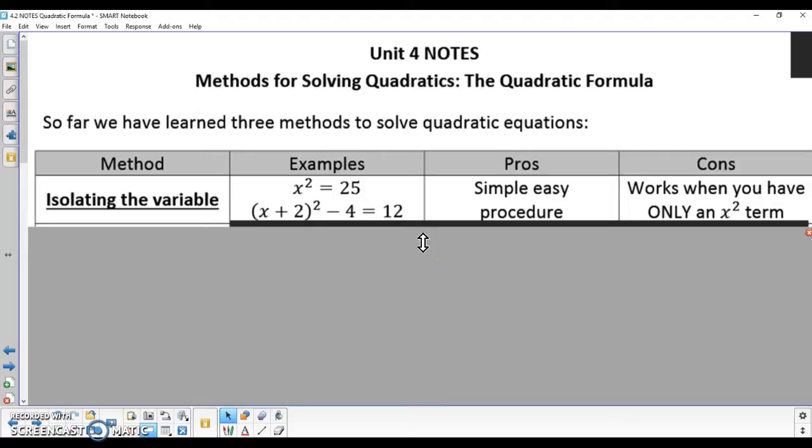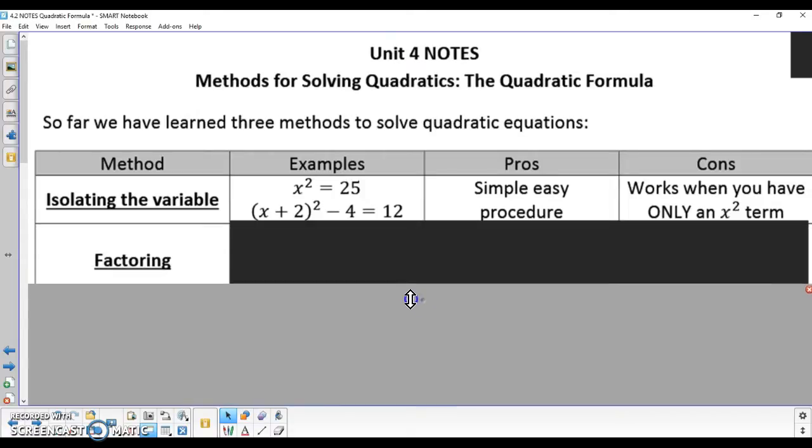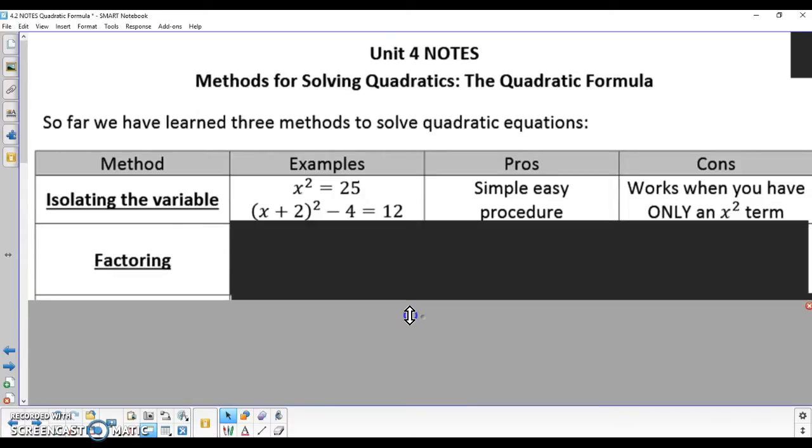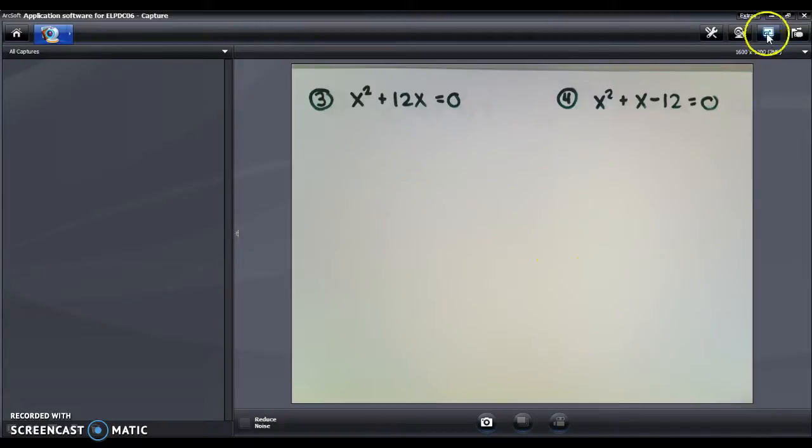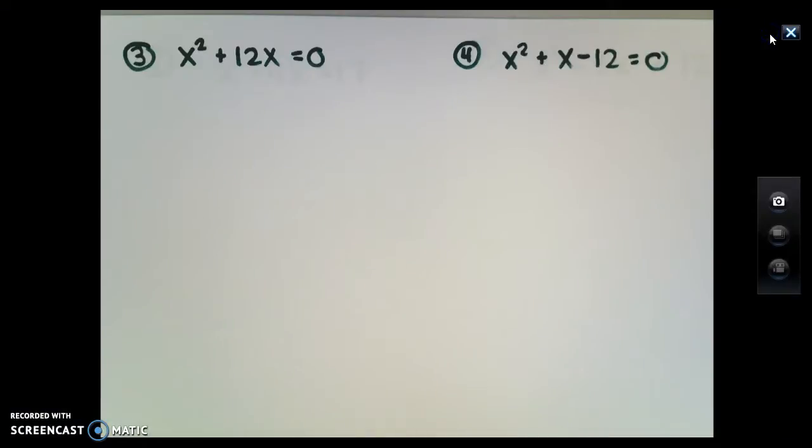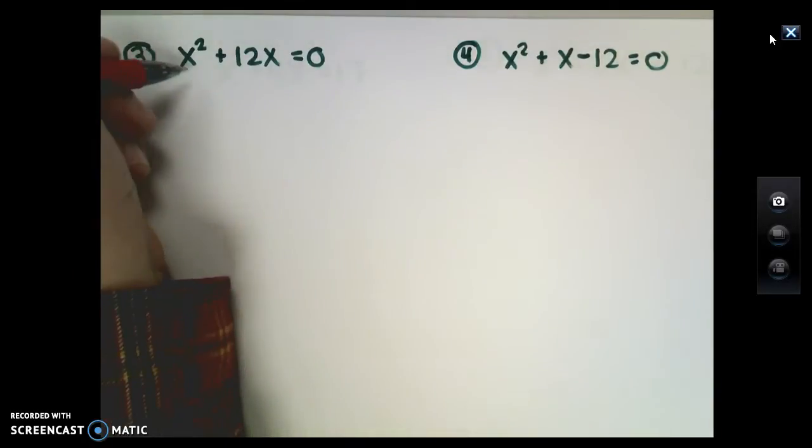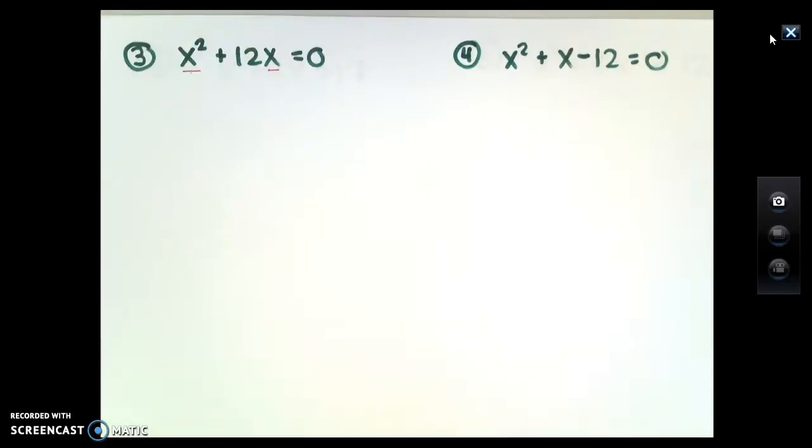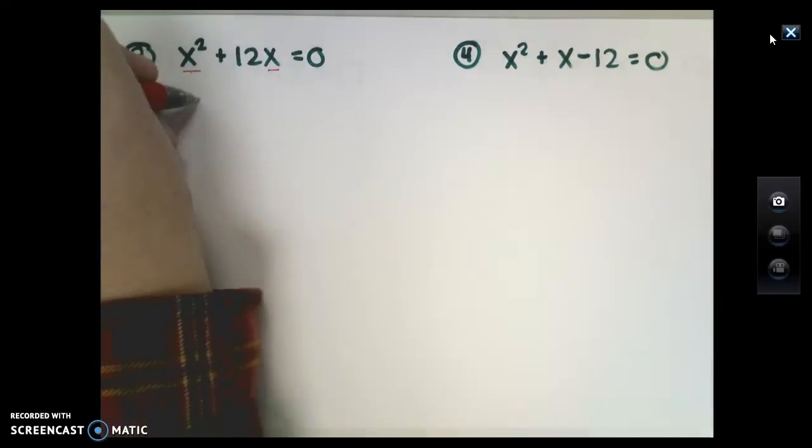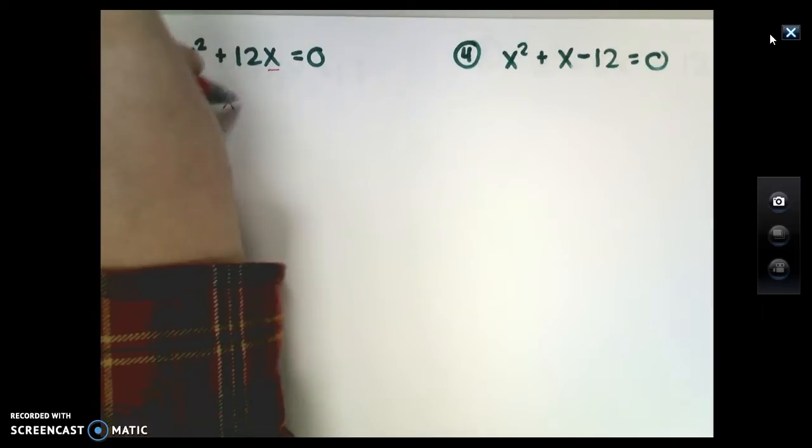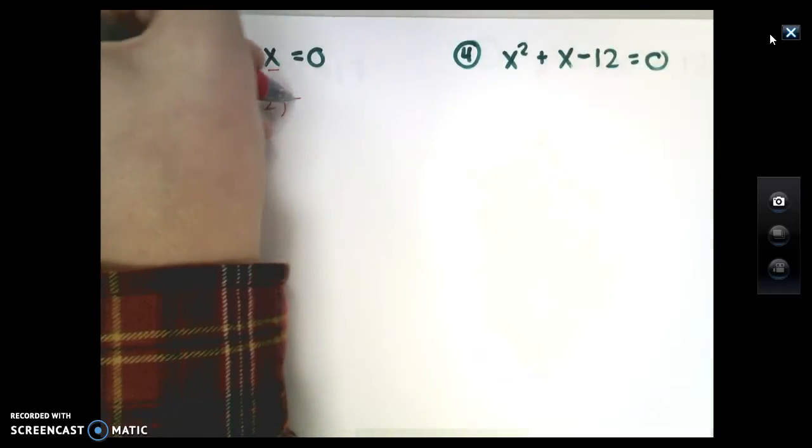Once we learned isolating the variable doesn't work all the time, we learned another very useful method that we spent most of this course working with, and that is factoring. The two examples we just looked at, example 3 and example 4, you can use factoring to solve instead. In number 3, I have a GCF or greatest common factor of x in both terms.